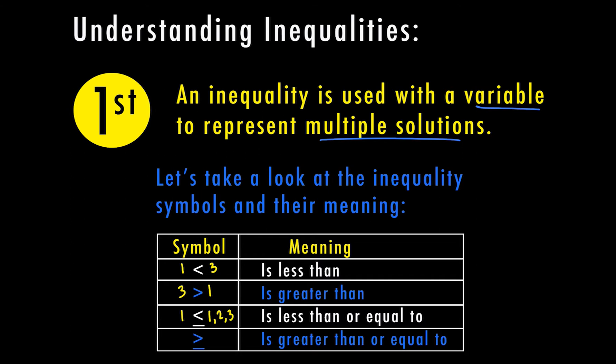The last symbol is the greater than or equal to symbol. If I had three on one side, I could have three, two, one, and so on — these can keep going. With the less than and greater than symbols, one is less than three, but I could have multiple solutions because one is less than a lot of different numbers.